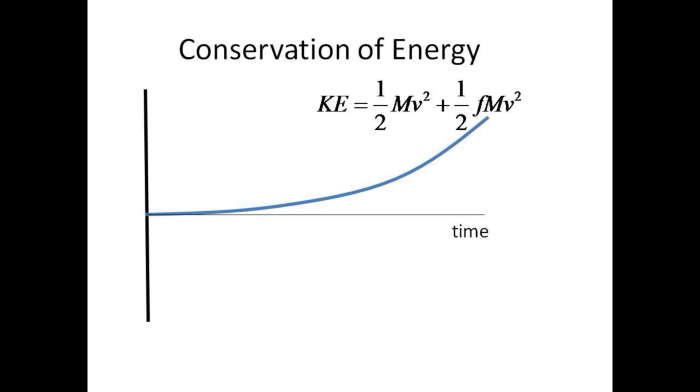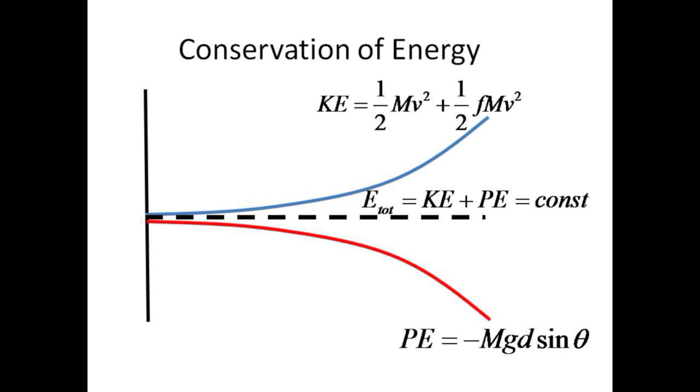If we were to plot just kinetic energy, we would expect it to increase as the object picks up both translational and rolling kinetic energy. The potential energy decreases toward larger negative values. The total energy, which is the sum of kinetic plus potential, is expected to remain constant.